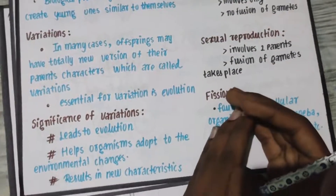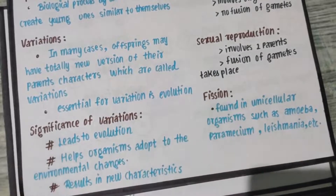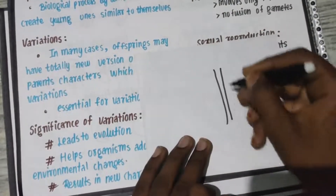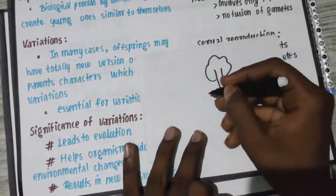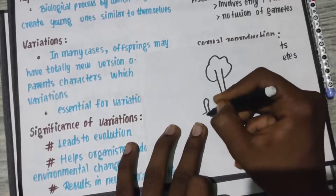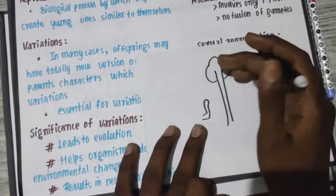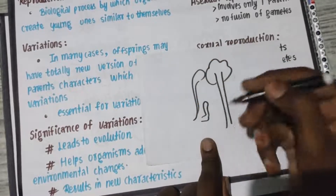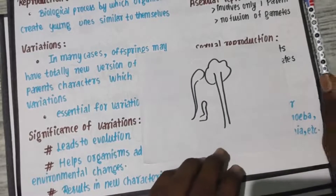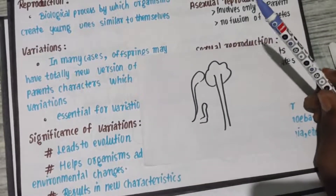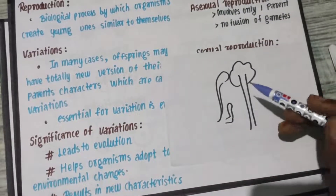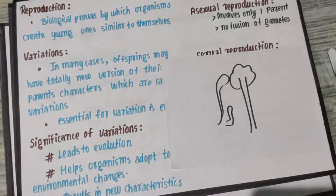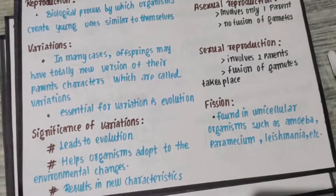For example, suppose there is a tall tree. If you see giraffes, initially they may be small. But as the tree grows taller, the branches go higher. The giraffes with longer necks can eat those branches and leaves. So as the environment changes, they can adapt by showing variations, and they can survive. This results in new characters — totally new characteristics through variations.